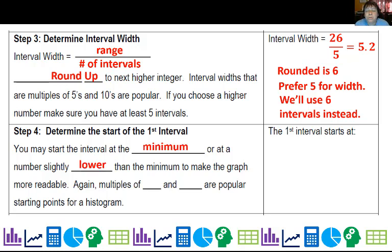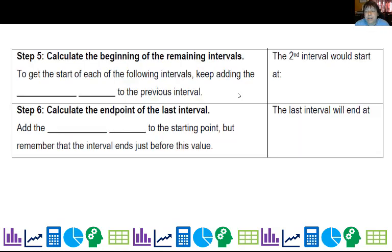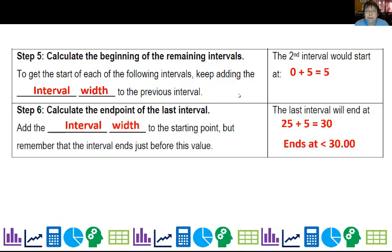Now you may start at the minimum or at a number slightly lower than the minimum to make the graph more readable. Again, multiples of 5 and 10 are quite popular. Now the min is 1 in our data, so we might as well start at 0. That kind of makes more sense. And so if we look at, we have widths of 5 and 6 of those intervals, that's 30. So we are going to cover all the data. Then we're going to calculate the beginning of the remaining intervals. So what we do is we take the interval width and just add that to the previous interval start. So the second interval, first interval starts at 0. The second interval will start at 5. And I keep going. When I get to that last interval that starts at 25, I can just add the interval width to that again, but remember it ends just below that value.